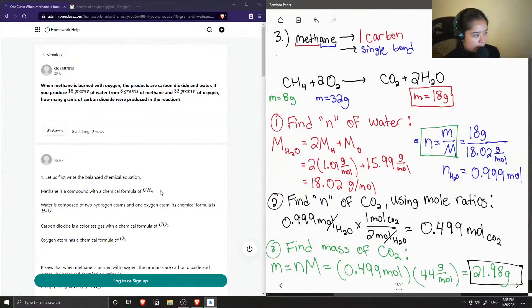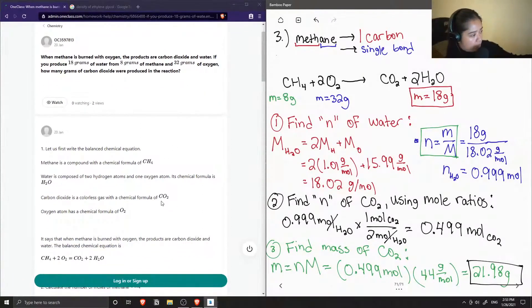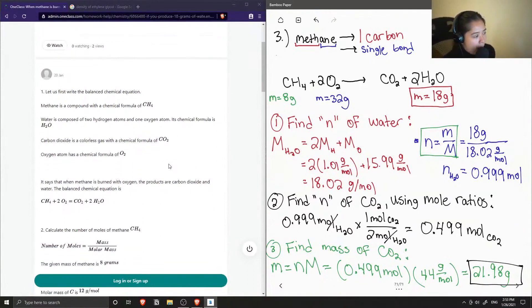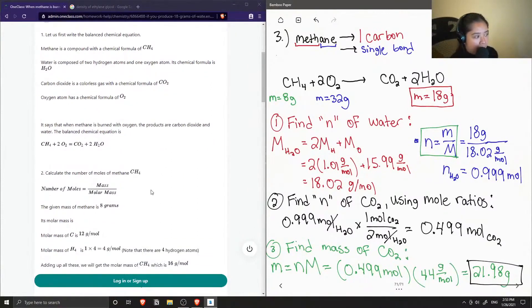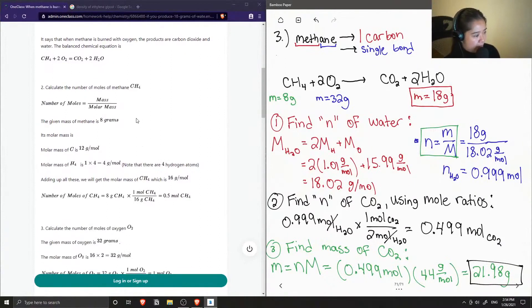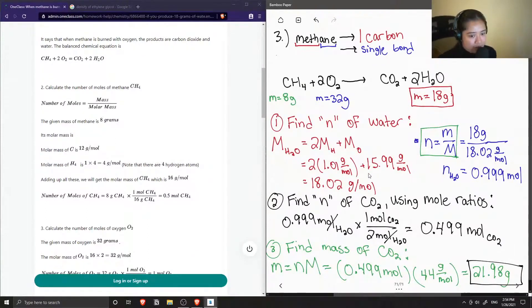Okay, so the junior tutor said, let us first write the balanced chemical equation. Methane is a compound with a chemical formula of CH4. And they wrote out water, carbon dioxide, and oxygen, and then they balanced their equation and put the coefficients of 2 in front of oxygen and water. So now they want to... Okay, so this is what I mean about how they added some additional information. So these steps aren't really needed because as you can see, we are able to find the mass of CO2 just by using the mass of water.